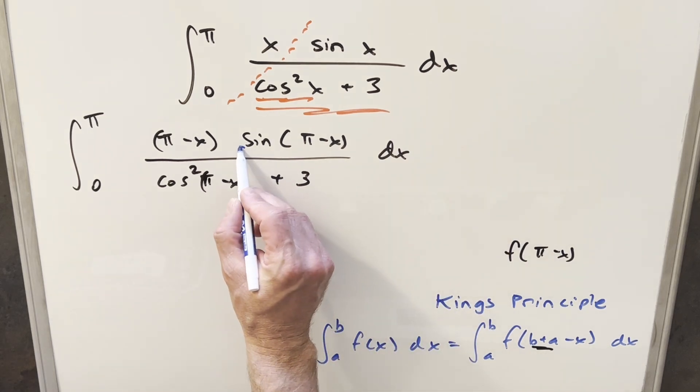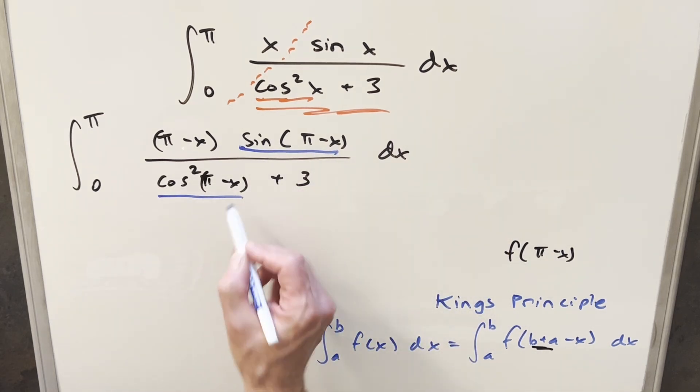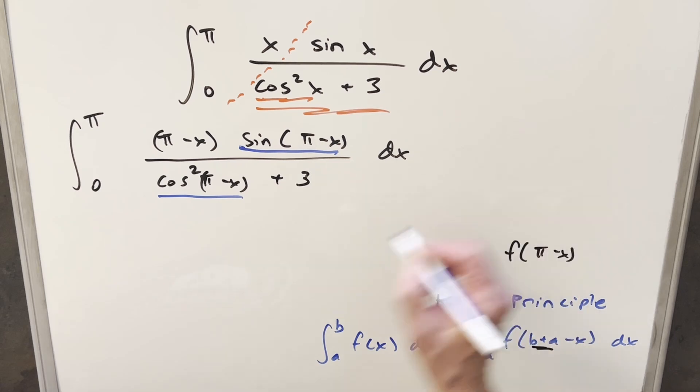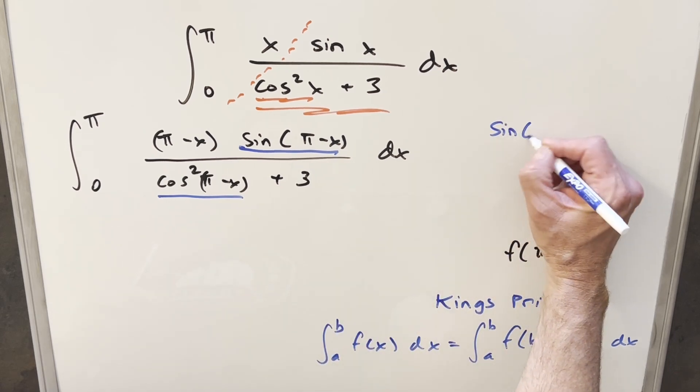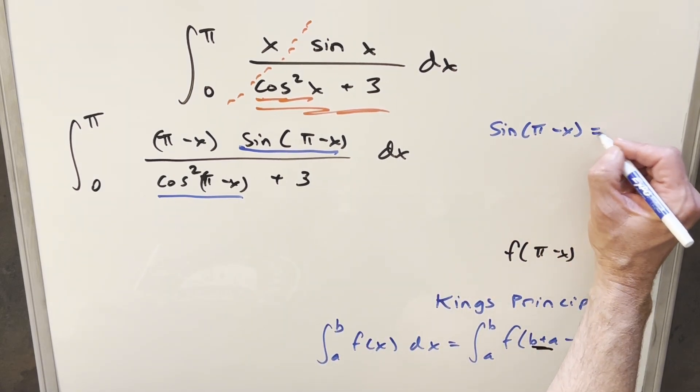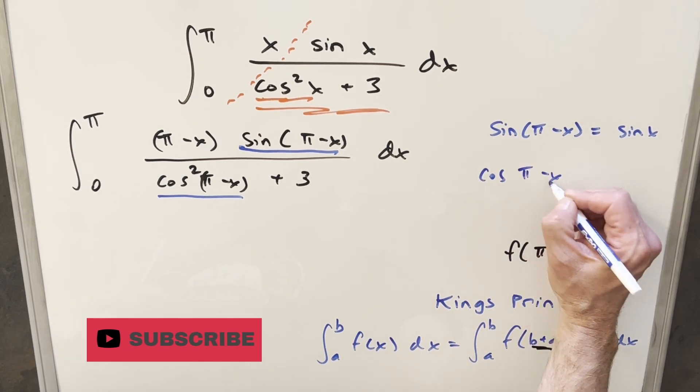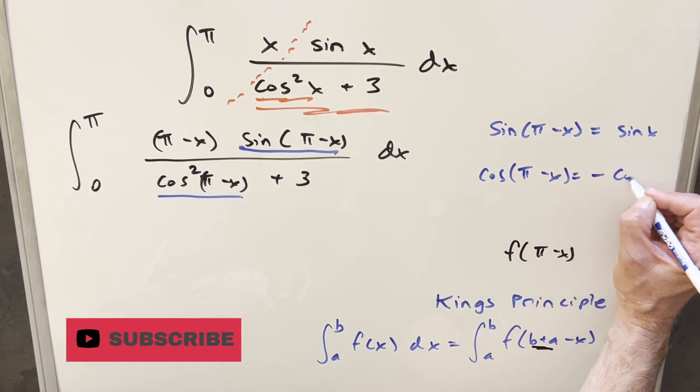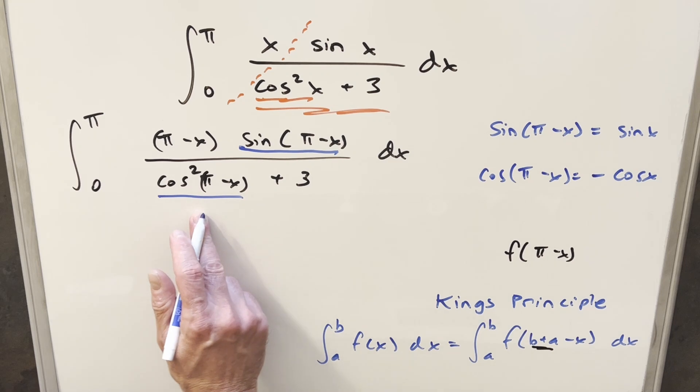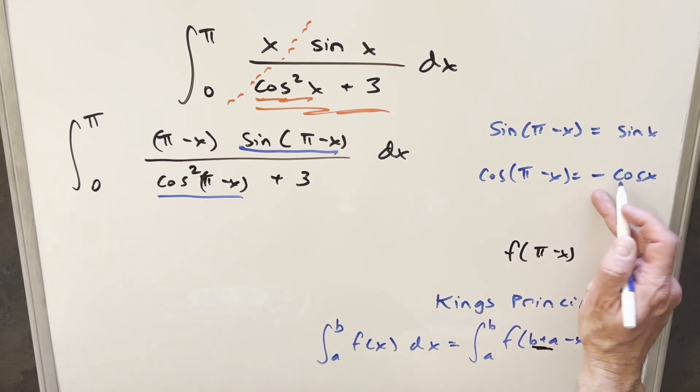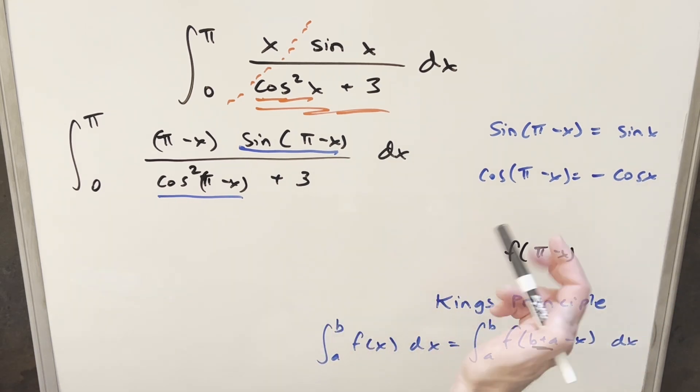And then from here, we can apply the supplementary angle formula for sine and cosine. Sine of pi minus x is just going to be the same thing as sine x. And then for cosine of pi minus x, this is the same thing as minus cosine of x. But because it's squared, it doesn't really matter because that's going to wipe out this minus sign.